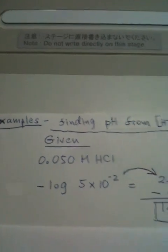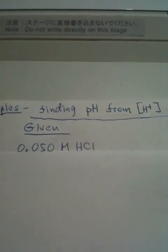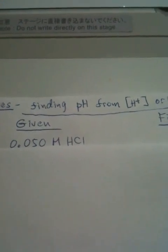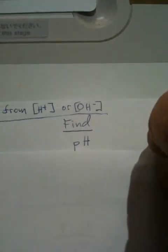Let's cover this up so you can concentrate a little better on what's given. It's 0.050 molar hydrochloric acid. We're supposed to find the pH.